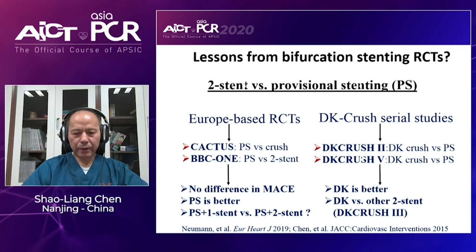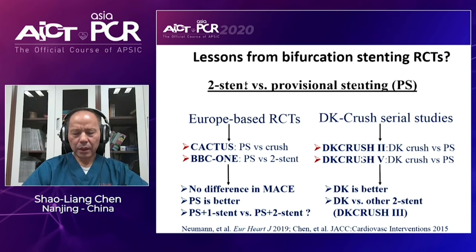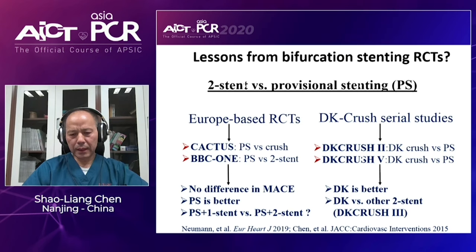From our DK CRUSH II and DK CRUSH V study, we compared DK CRUSH versus provisional stenting technique. At one-year follow-up, we got negative clinical results from DK CRUSH II. But in our DK CRUSH V study, which only included distal left main and true coronary bifurcation lesions, there was a significant reduction of one-year target lesion failure after DK CRUSH compared to provisional stenting. So we can conclude that DK CRUSH is much better than provisional stenting from our DK CRUSH serial trials.